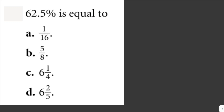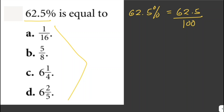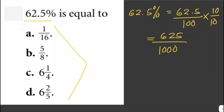Sixty-two point five percent is equal to what? Since our choices are in fraction form, we need to write 62.5% in fraction form. To do that, we divide 62.5 over 100. We can rewrite 62.5 over 100 into one of the given fractions by multiplying both the numerator and denominator by ten, giving us 625 over 1000.